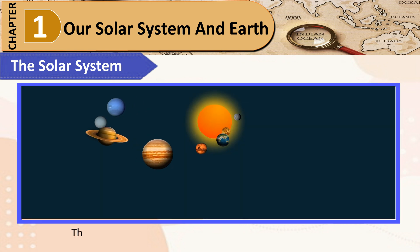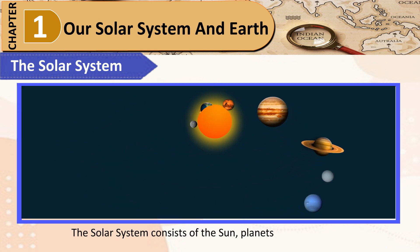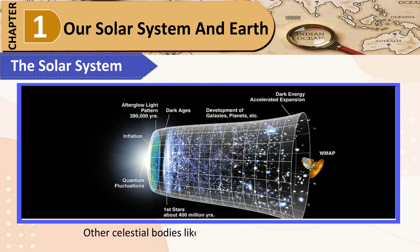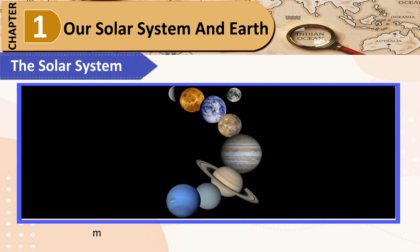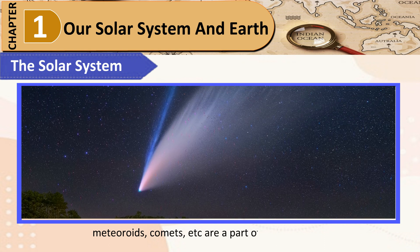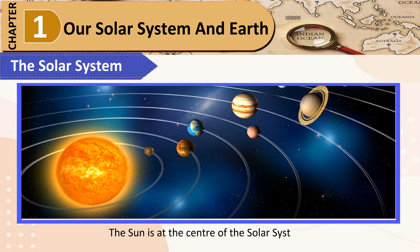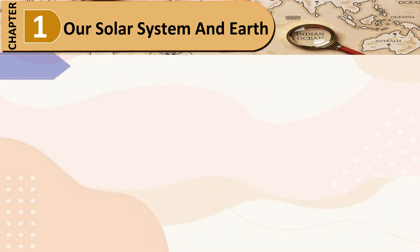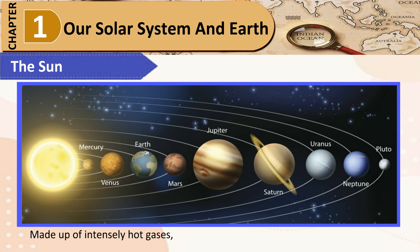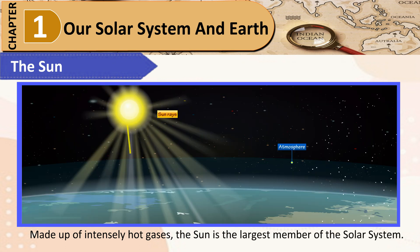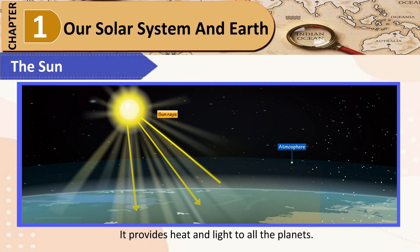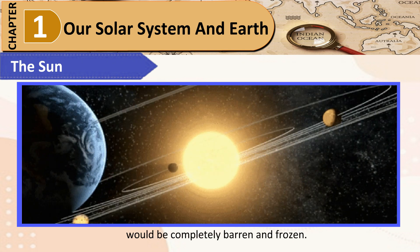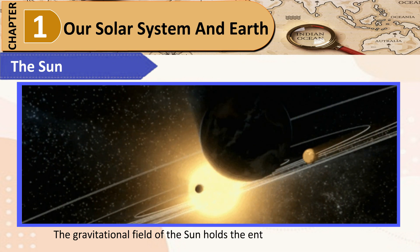The Solar System consists of the Sun and planets, including our Earth, which revolve around the Sun in fixed paths called orbits. Other celestial bodies like asteroids, moons, dwarf planets, meteoroids, and comets are also part of the Solar System. The Sun is at the center and its gravitational pull keeps all the planets in their orbits. Made up of intensely hot gases, the Sun is the largest member of the Solar System. It provides heat and light to all the planets. Without the Sun, life on Earth would not exist and our planet would be completely barren and frozen.